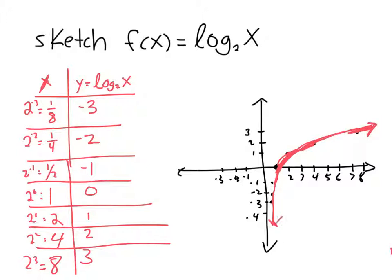So this is the graph of f of x. One thing I want to point out is that it has a vertical asymptote at x equals 0. In the next slide, let me go ahead and show how this is an inverse of 2 to the x.